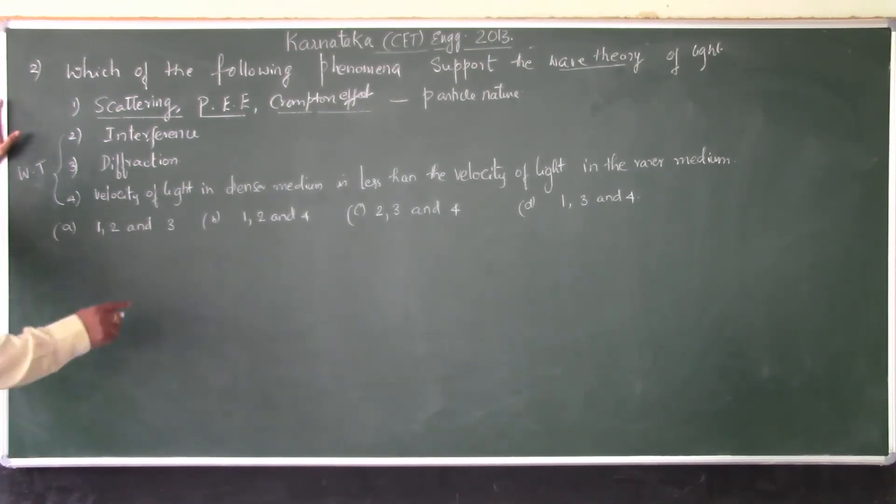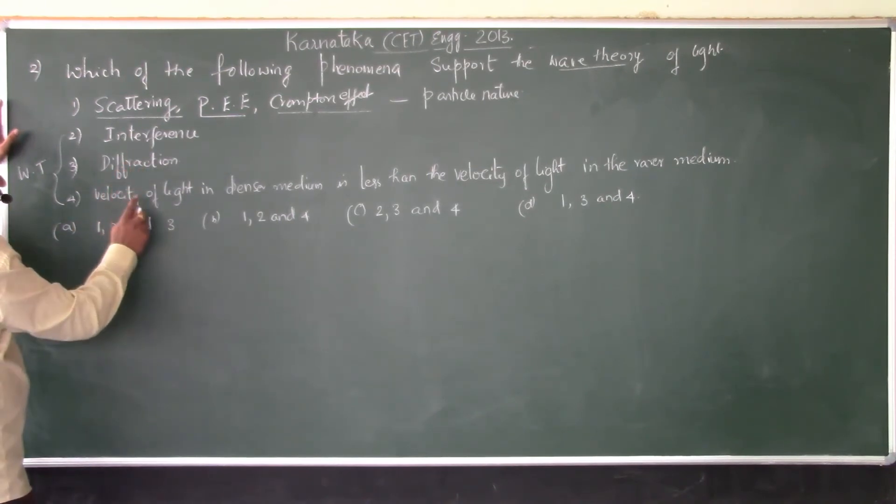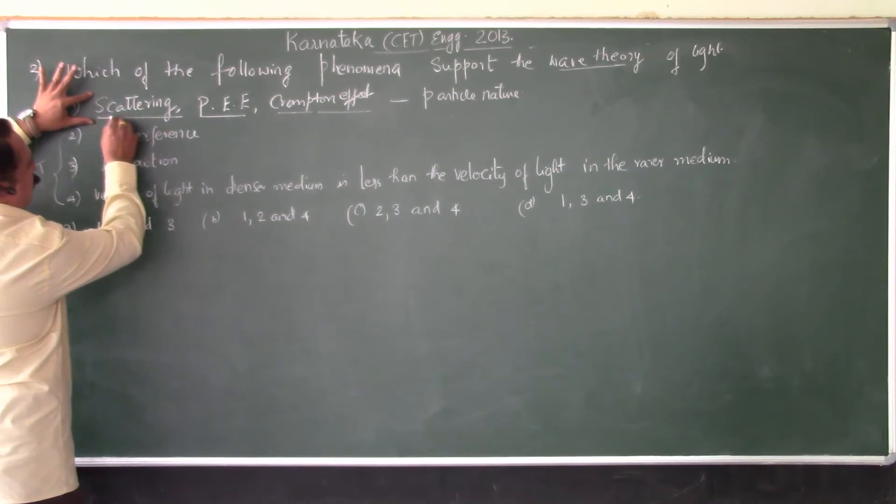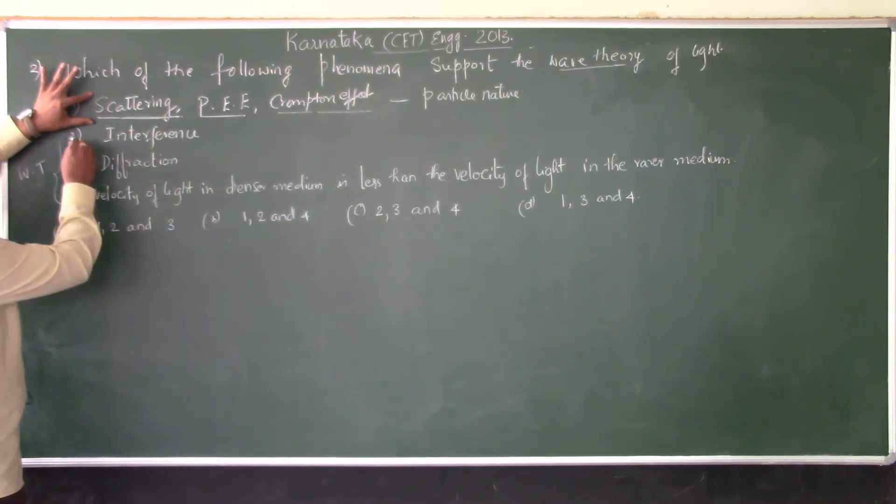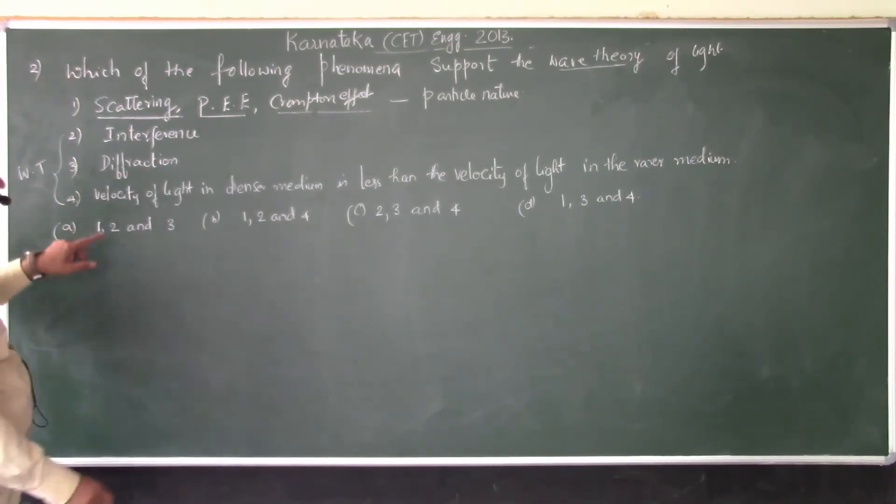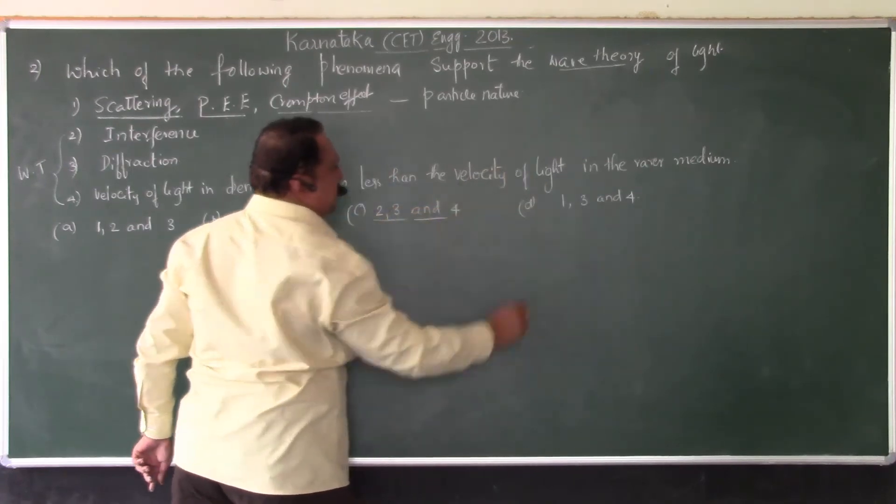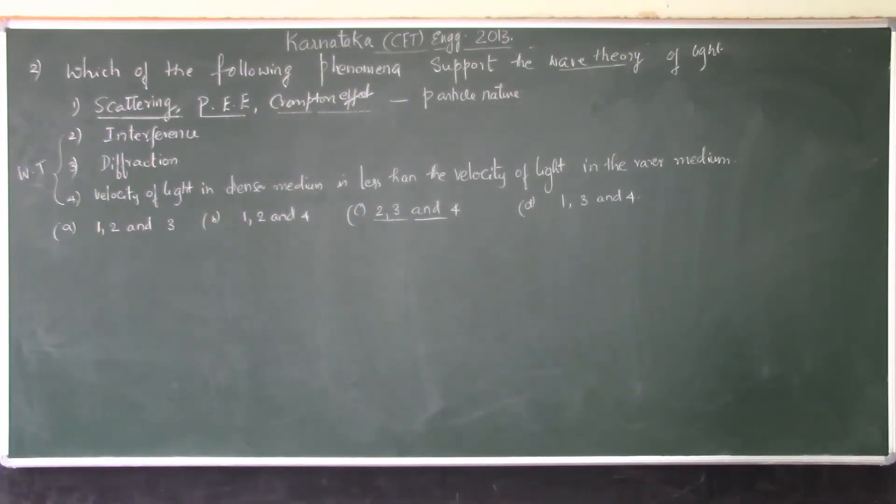Which phenomena support wave theory? Interference, diffraction, velocity. So in this question, one is not supported by wave theory. Two, three, four are supported by wave theory. So the answer is C. Two, three, and four are based on the wave nature of light.